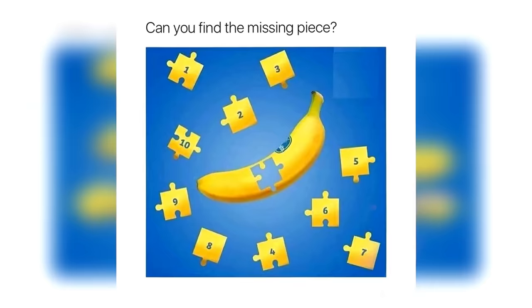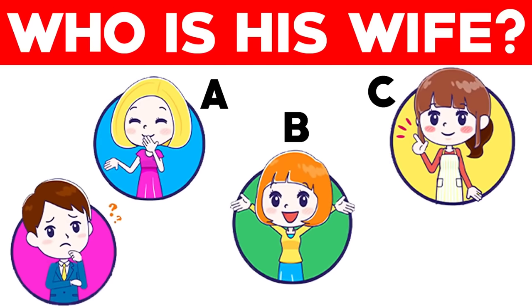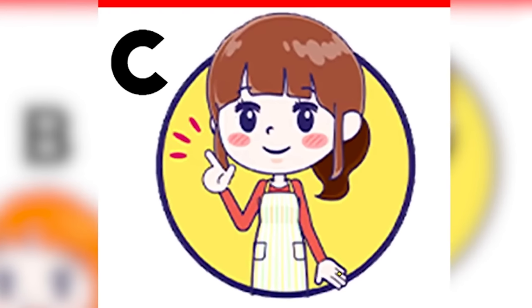This man is trying to find his wife — are you able to help him figure out which one of these ladies is his wife? This is really going to test your eyes, so comment which lady you think it is. The answer is lady C: if you look closely, she has a wedding ring on her finger, meaning she is married to this man.